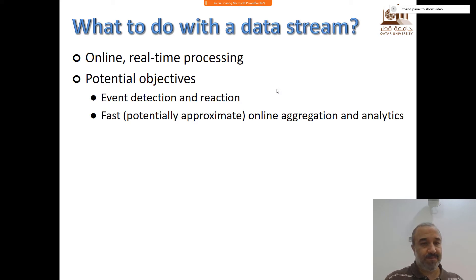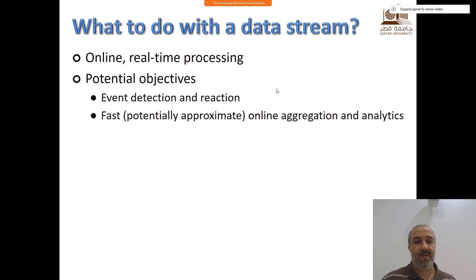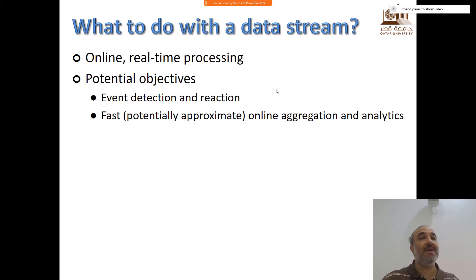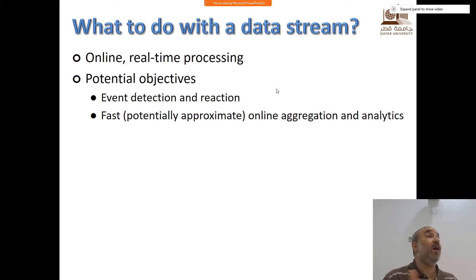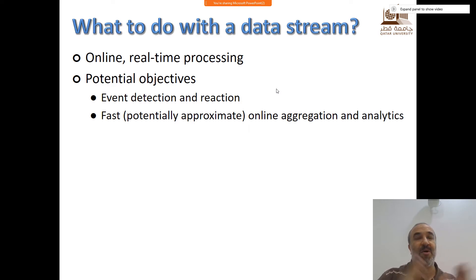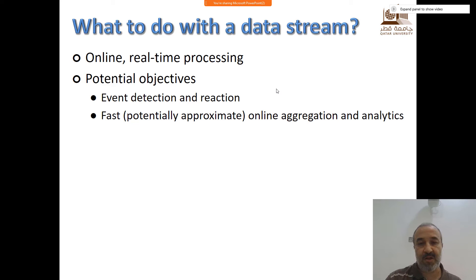What do we do with data streams? Usually we have one of two things: either we detect some events and react to them when they happen in the stream, or we do online aggregation — some computation, some statistics, some analytics that we keep doing over time. These are the potential objectives of processing streams. And of course that has to be done online, because it's continuous. I cannot do it offline — if I do it offline, I will miss a large part of the stream. So I have to do it in real time, or near real time.